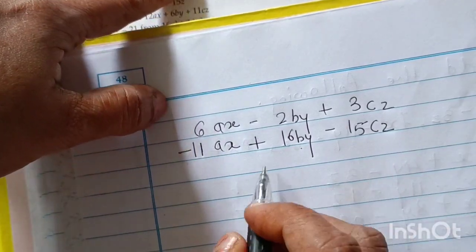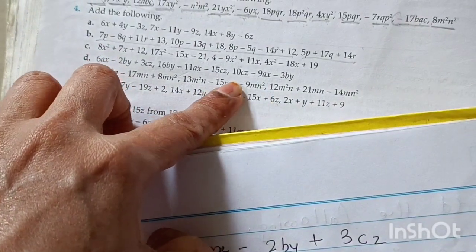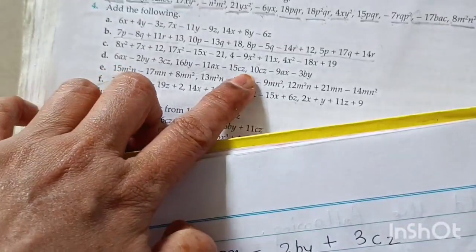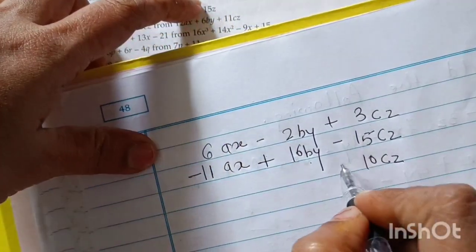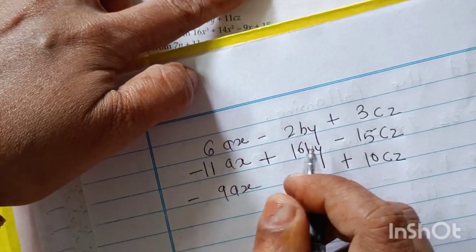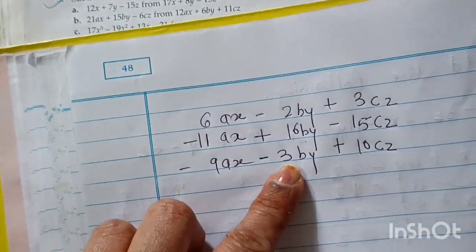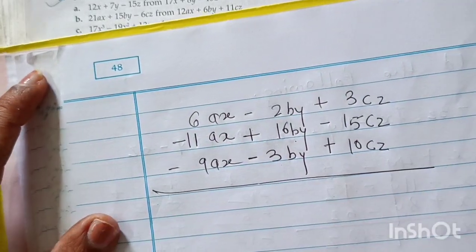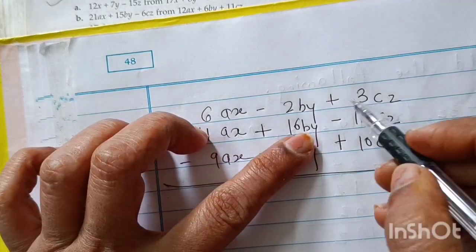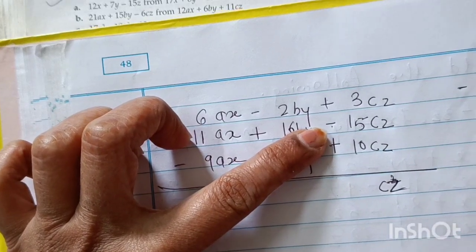After that, the third expression starts with 10CZ, so 10CZ goes under the CZ column. There is no sign before it, so it is positive. Then negative 9AX goes under AX. Then negative 3BY goes under BY. Now let us solve: plus minus minus for CZ — so 15 minus 3 = 12. Bigger number is negative, so negative 12.